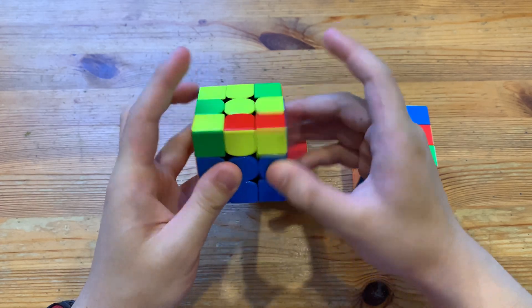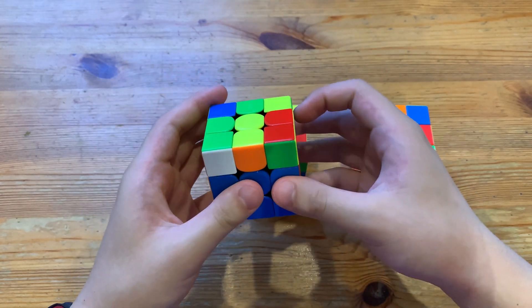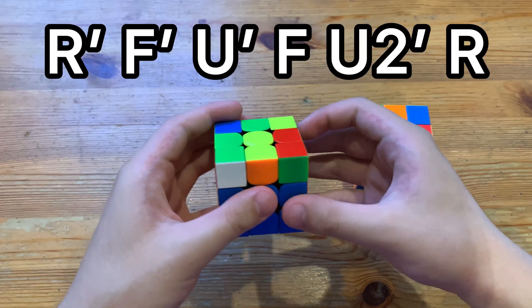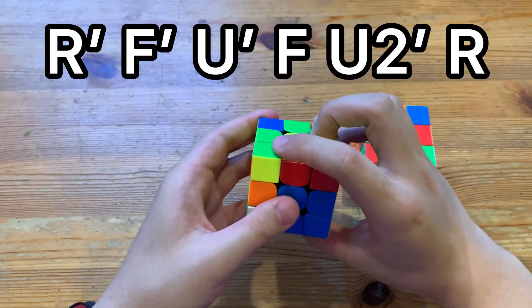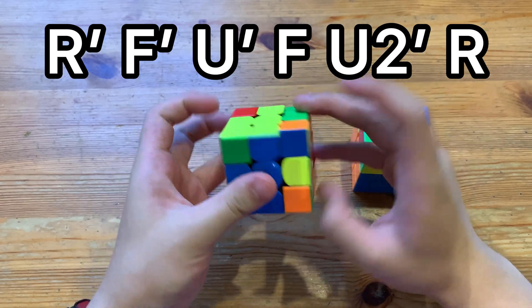Instead of solving it like this and then getting two edges, you can just do something like that, and the algorithm again, R'F'U'F, and then U2'R.